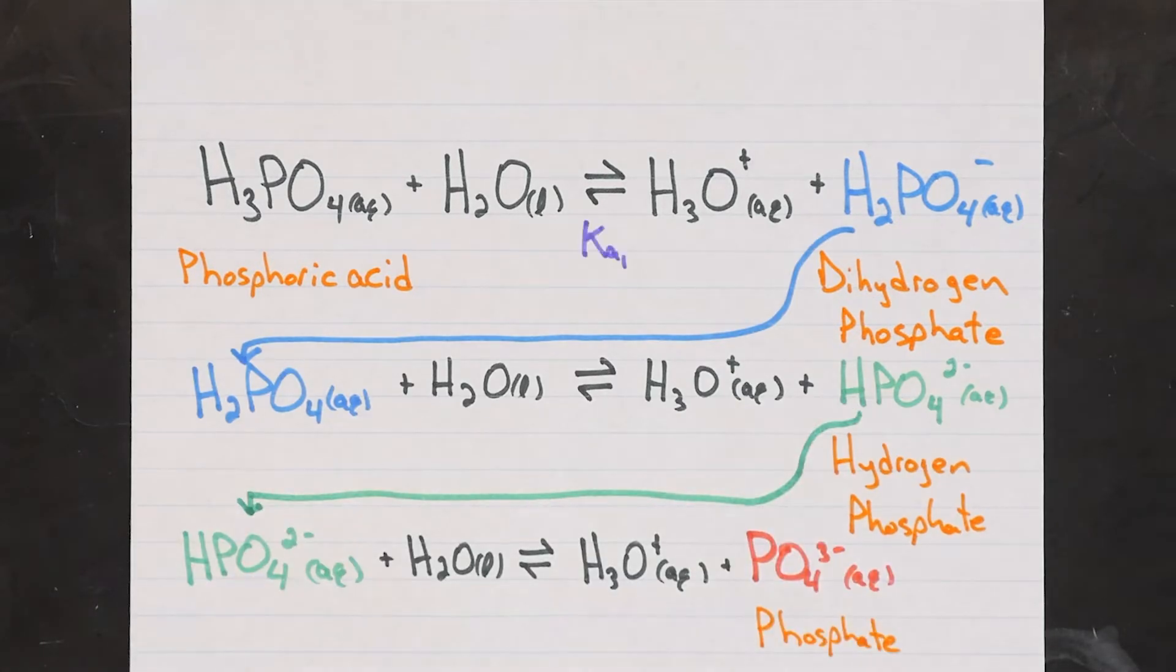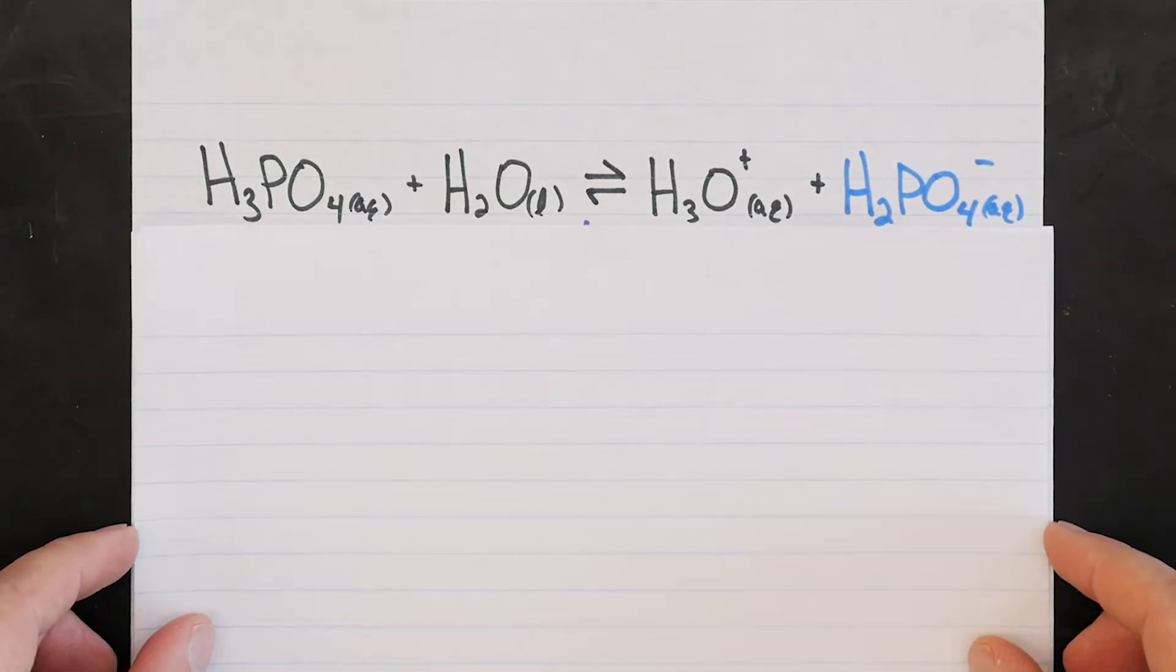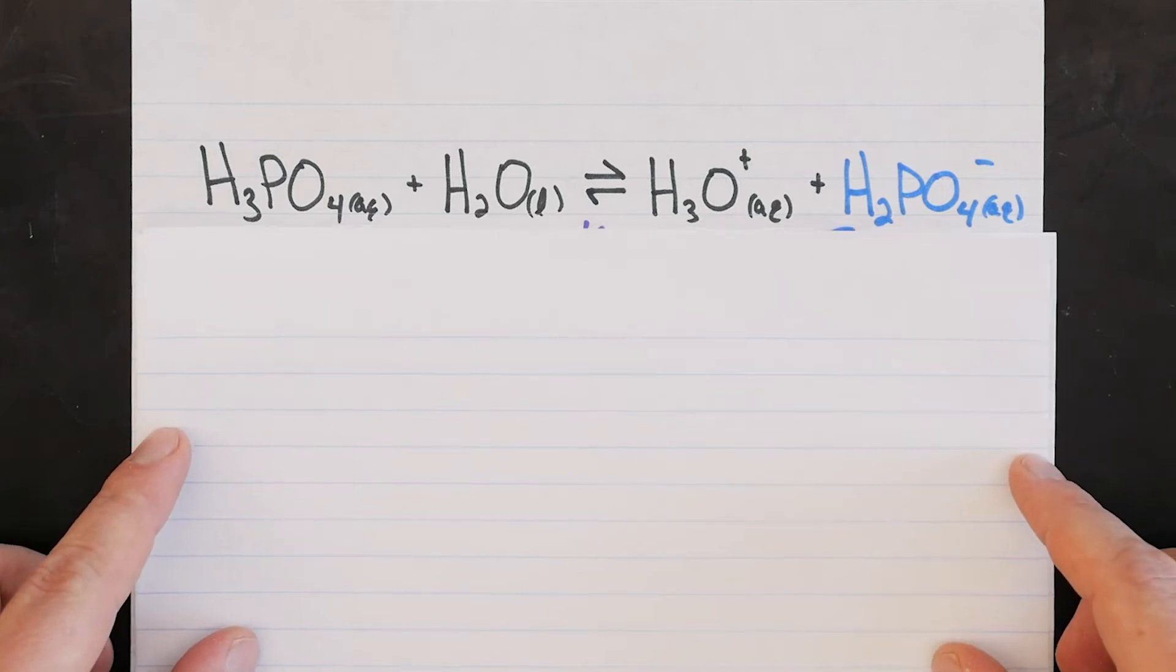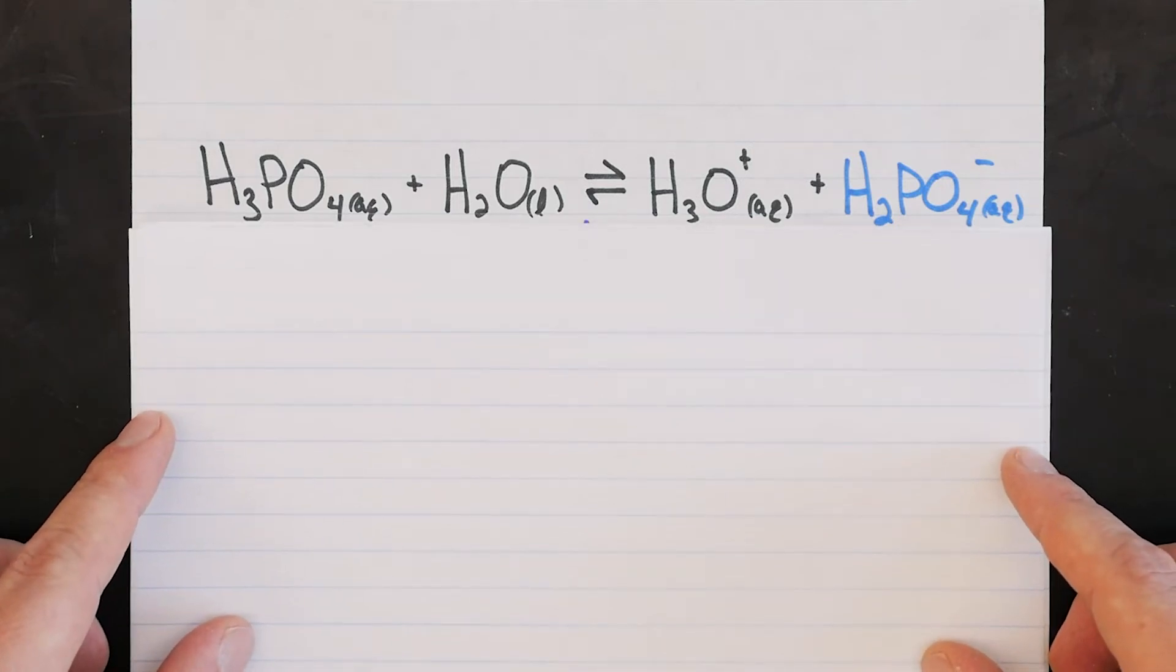Each time, it becomes more and more difficult to lose these protons, because the conjugate base becomes more and more anionic, but exactly how difficult does it become? In other words, how strong are each of these conjugate acids?